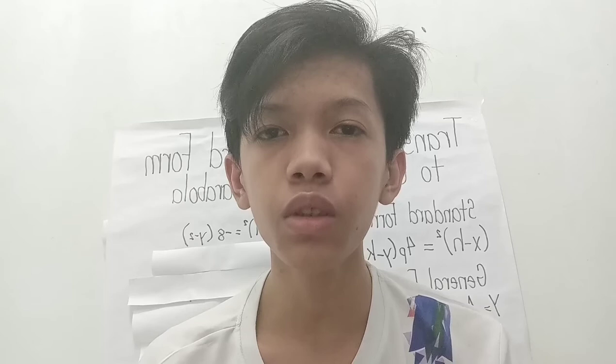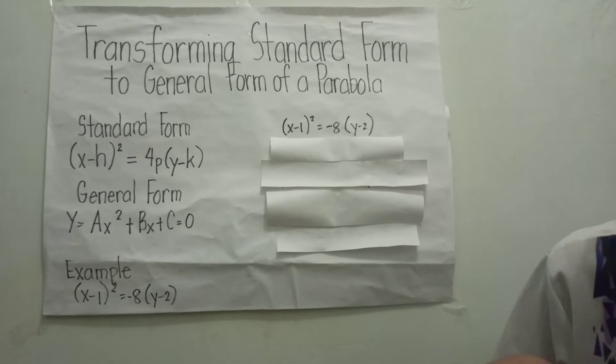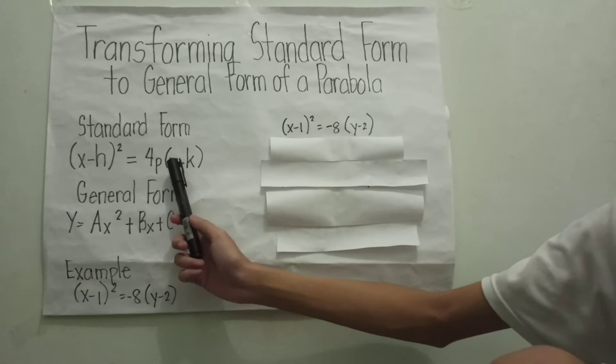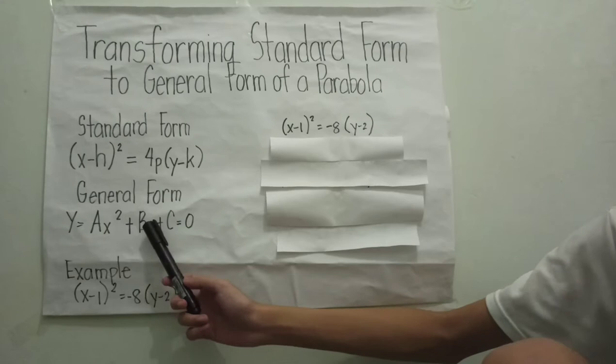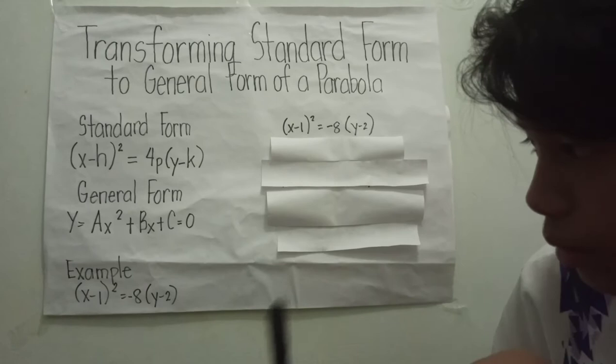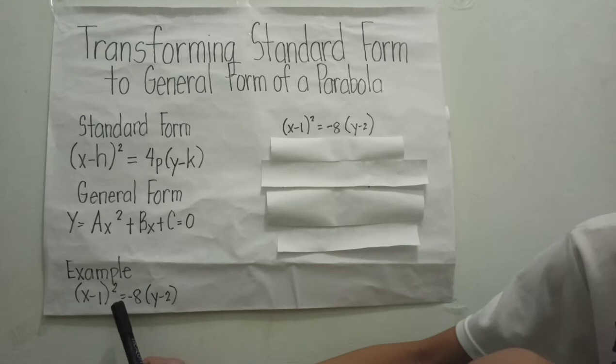Hello everyone, welcome to our channel. My name is Kim Rafael and I'm here to teach you about transforming standard form to general form of a parabola. Our standard form is (x minus h) squared equals 4p(y minus k), and our general form is y equals ax squared plus bx plus c equals zero.